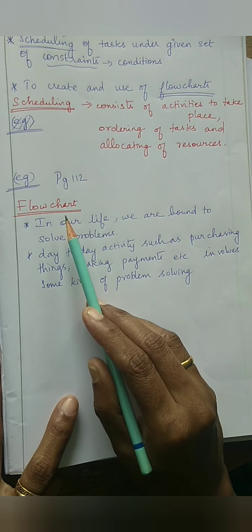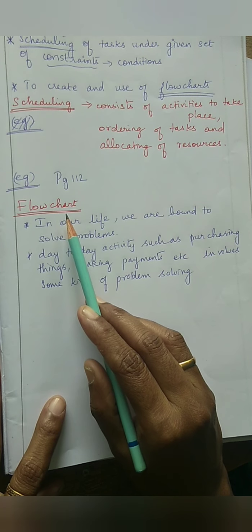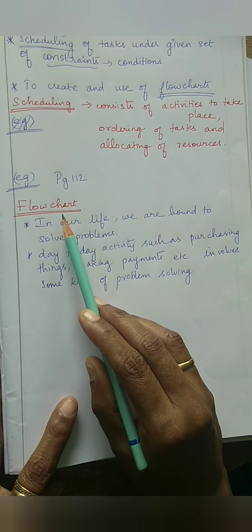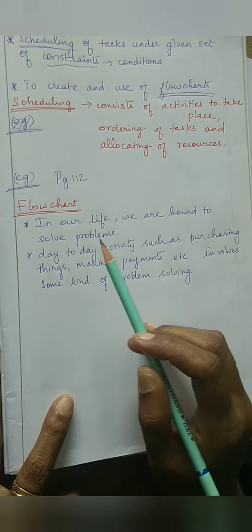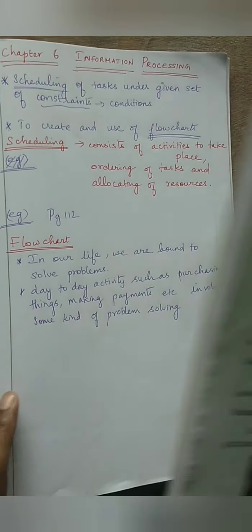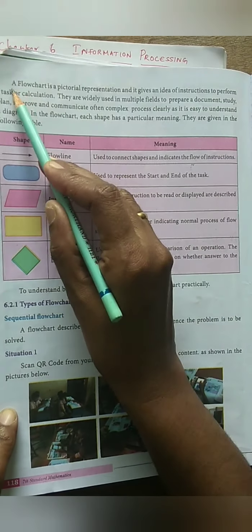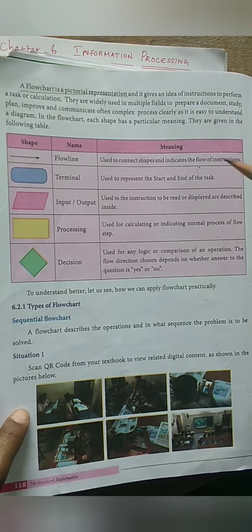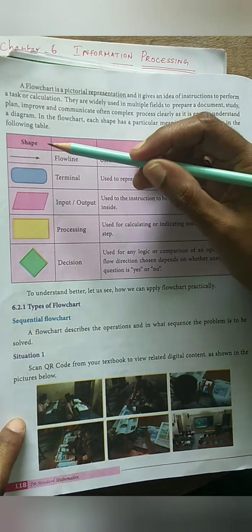Using this flowchart, you can easily solve the problem. Seeing the flowchart, the problem can be identified properly and the solution we can get at the end. Flowchart is nothing but a pictorial representation. Now for a pictorial representation, there are some symbols or shapes being used.